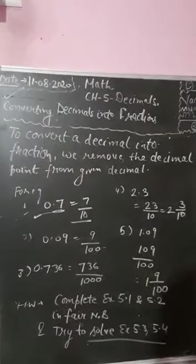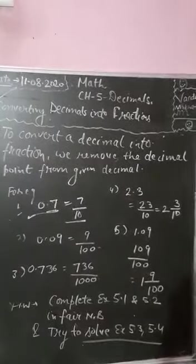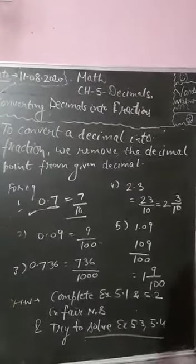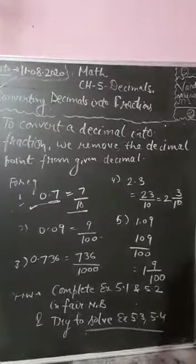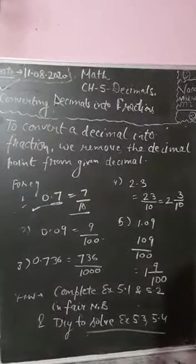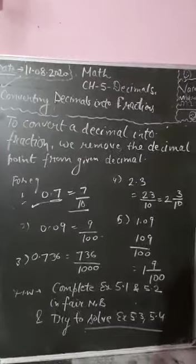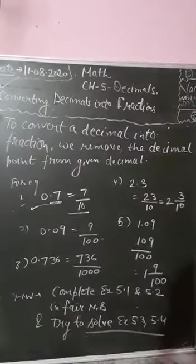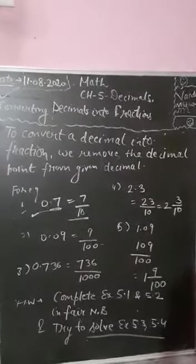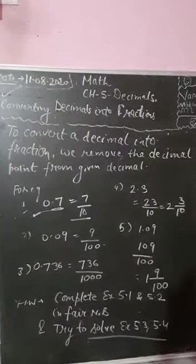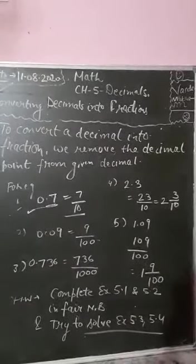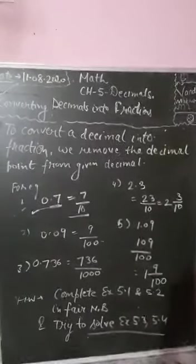For 2.3, the answer is 23 upon 10. Further, you can convert it into a mixed fraction: 2 and 3 by 10, as we have done in the fractions chapter. For question 5, 1.09: remove the decimal point, so the fraction is 109 upon 100, which as a mixed fraction is 1 and 9 by 100.